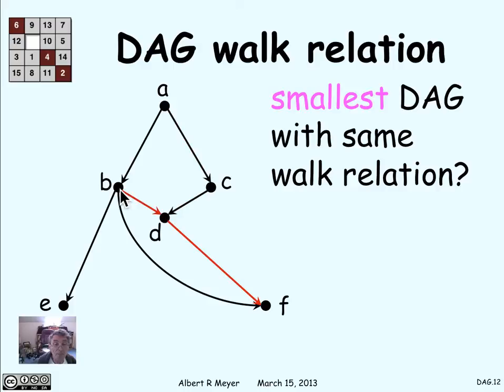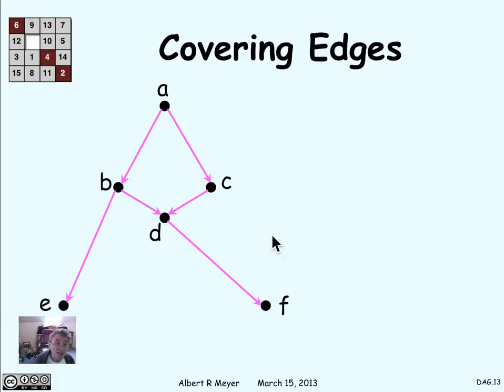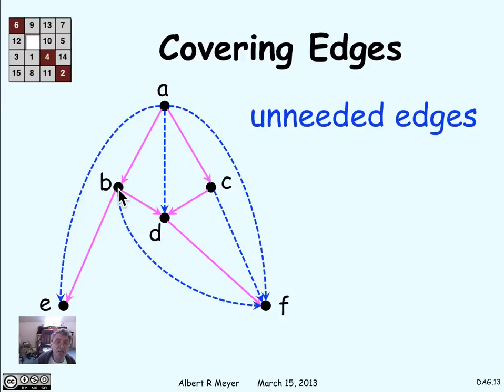If I look at the path from B to D to F, I can get rid of the direct edge from B to F as well. At this point I'm done, and I'm left with a set of edges called covering edges, which have the property that the only way to get from one vertex to another is to use a covering edge to the target vertex. The only way to get from A to B, for instance, is to use that covering edge — if there was any other path, it wouldn't be a covering edge. The fact that it's a covering edge means that if you broke it, there's no way anymore to get from A to B. The other edges are unneeded to define the walk relation, and all we need to keep are the covering edges to get the minimum representation of the walk relation in terms of a DAG.